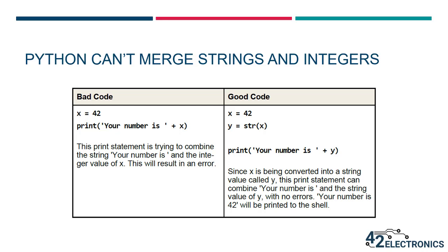On the left side, the print statement is attempting to merge the string 'your number is' with the integer value of x. This is going to cause an error. But on the right side, the integer value x is first converted into a string value called variable y. This allows the print statement to combine the string 'your number is' with the string 42 and the sentence 'your number is 42' will then be printed to the shell.